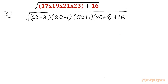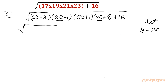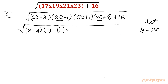Now let us consider y equal to 20, because 20 is common — in each bracket it is there. So let me write it as y. So we have y minus 3, y minus 1, y plus 1, y plus 3, plus 16.